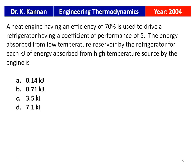Second question from the 2004 GATE paper. A heat engine having an efficiency of 70% is used to drive a refrigerator having a COP (coefficient of performance) of 5. The energy absorbed from the low temperature reservoir by the refrigerator for each kilojoule of energy absorbed from the high temperature source by the heat engine is — options: 0.14 kJ, 0.71 kJ, 3.5 kJ, and 7.1 kJ.